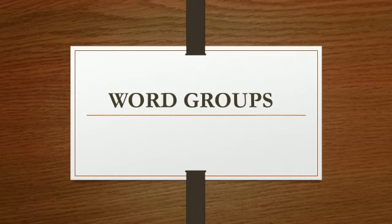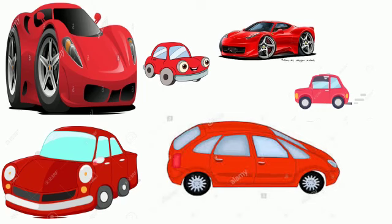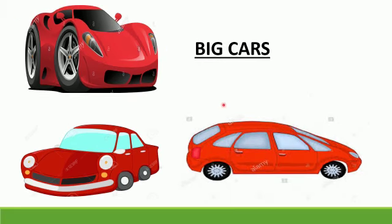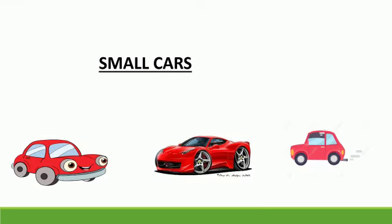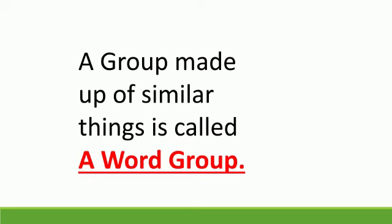Now we'll learn Word Groups. See here — what is all this? Which picture are you seeing on your screen? These are all cars, but is anything different between them? Yes! Some are big and some are small. So we'll divide them into two groups: big cars and small cars. A group made up of similar things is called a Word Group.